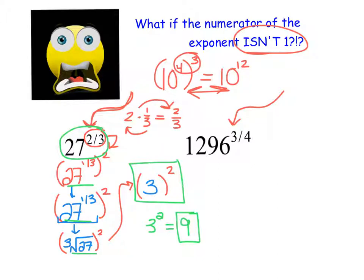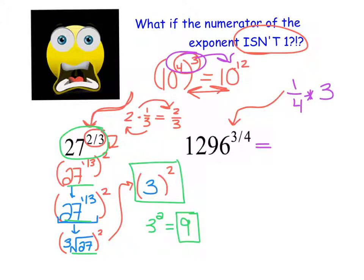So if we can rewrite all of these fractional exponents using the powers-to-powers property in reverse, we'll actually be able to evaluate all of these different fractional exponent expressions. Now I'm going to look at the second problem and rewrite it the same way. I know that 1 fourth times 3 gives me 3 fourths, so I'm going to rewrite this as 1296 to the power of 1 fourth, all raised to the power of 3. I've just undone the powers-to-powers rule in reverse.